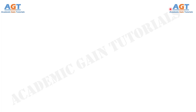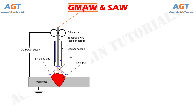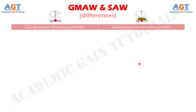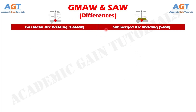Welcome to Academic Game Tutorials. In this video, we will look into the differences between gas metal arc welding and submerged arc welding. Gas metal arc welding is one fusion welding process where the electric arc is established between a consumable wire electrode and the base plates. Submerged arc welding is also one fusion welding process based on a consumable electrode, where a wire electrode is continuously fed into the welding zone from a spool. Let's look into the basic differences between these two processes in a tabular form.